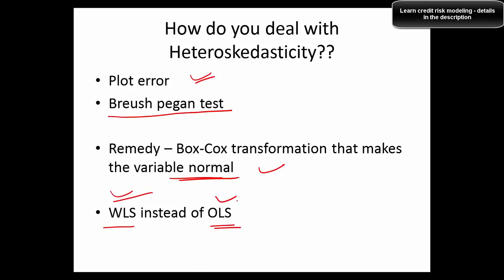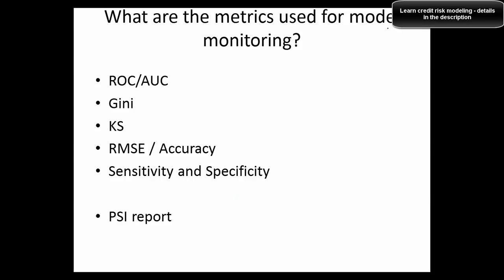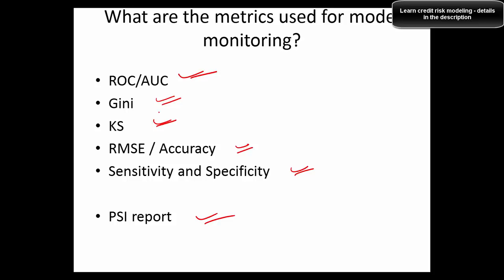What metrics are used for model monitoring? Key metrics include ROC AUC (Receiver Operating Characteristics Area Under Curve), Gini coefficient, Kolmogorov-Smirnov statistic, Root Mean Square Error, accuracy, sensitivity, specificity, and PSI (Population Stability Index). These are the major metrics used for model monitoring, and we will discuss more advanced questions on statistical modeling in the next video.